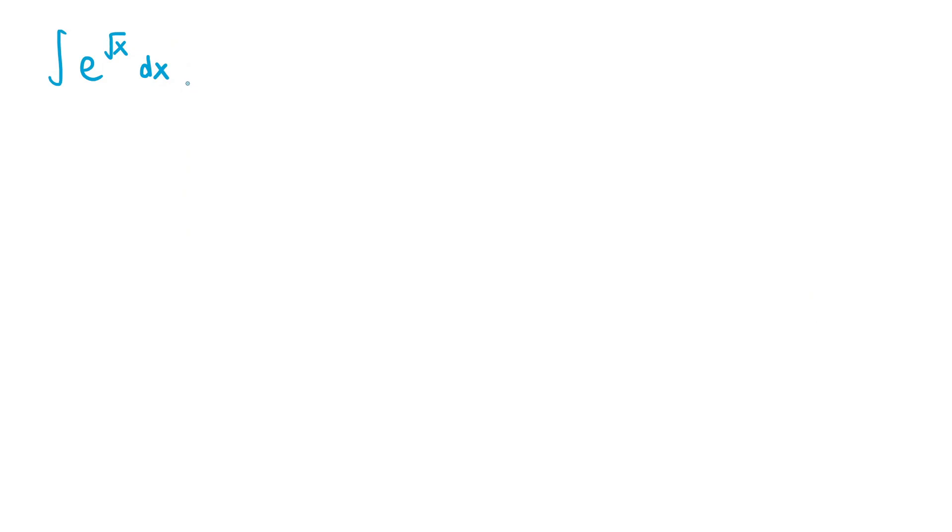Alright, so let's do the integral of e to the power of the square root of x dx. We can do the substitution u equals the square root of x, which means du is equal to 1 over 2 times the square root of x dx.